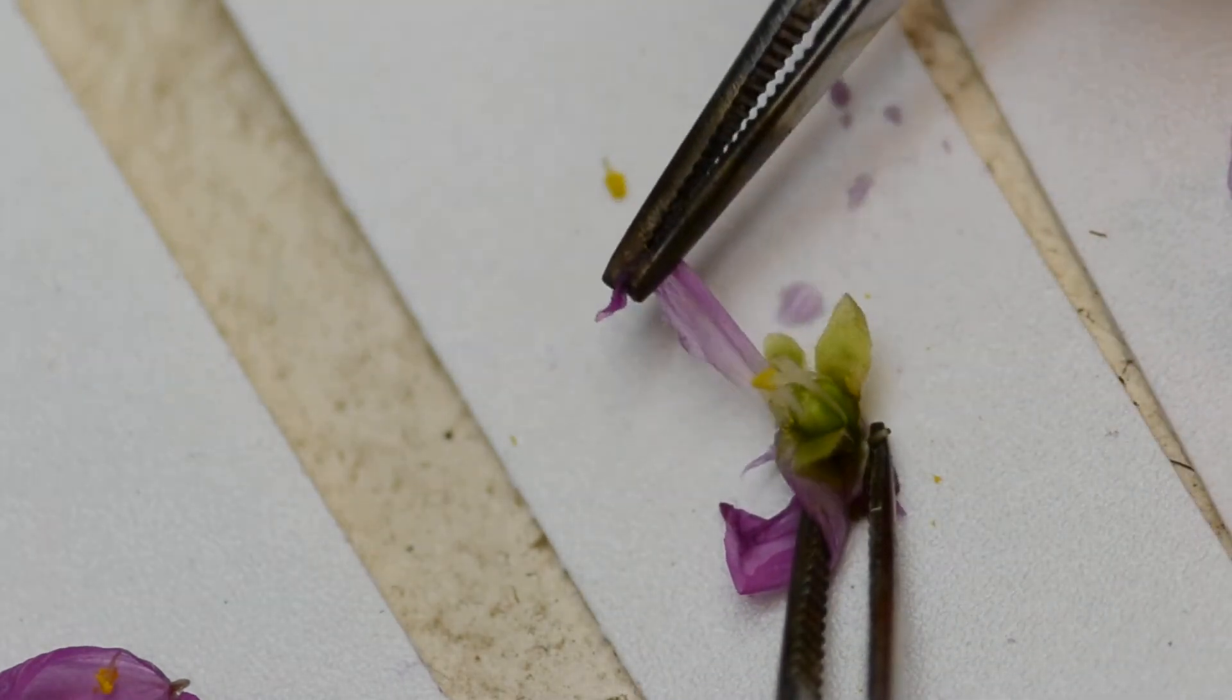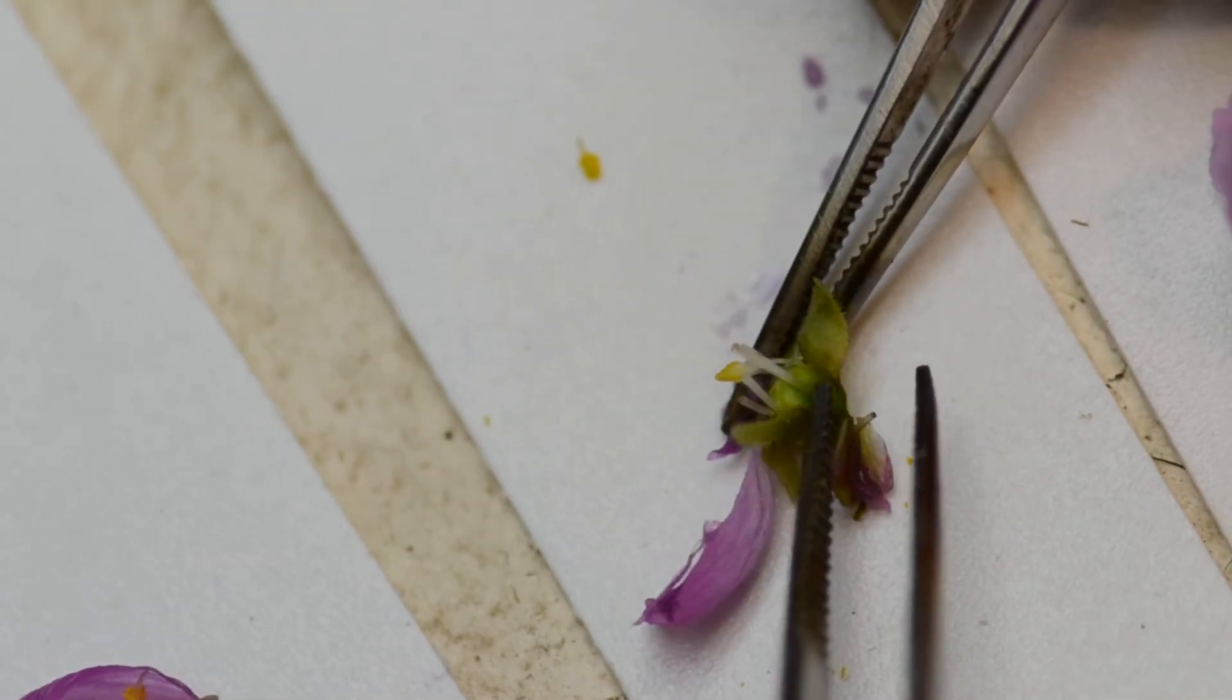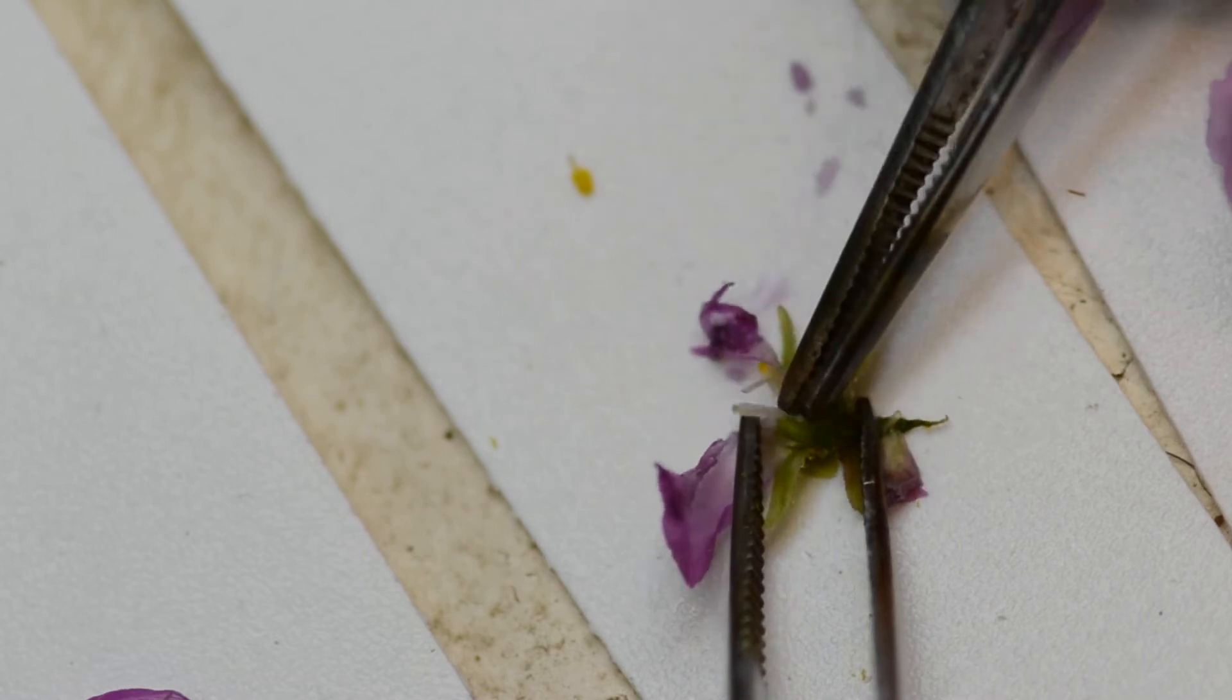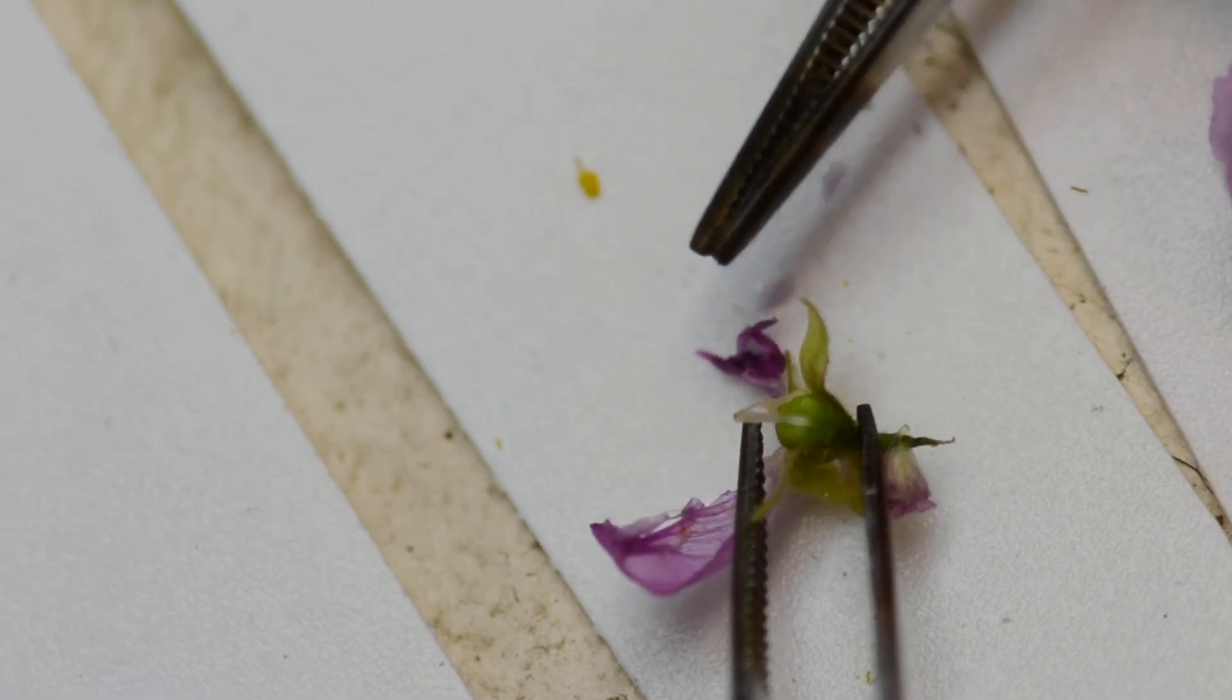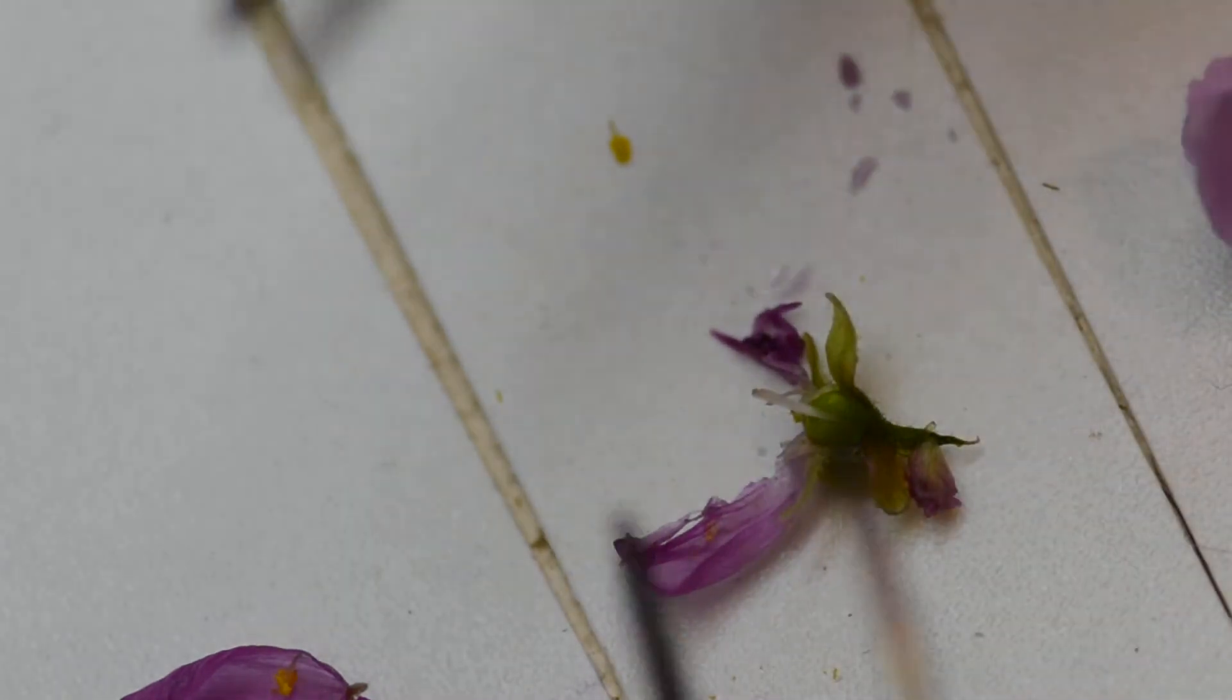So after the stigmas are pollinated, the pollen germinates all the way down into the ovary. And the ovary is divided into three parts in the case of this species, and most of Drosera is three parts.